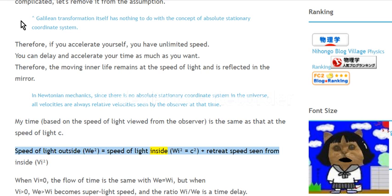Wi squared equals c squared plus retreat speed seen from inside, v squared. When v equals 0, the flow of time is the same with we equals wi. But when v is not 0, wi becomes super light speed and the ratio wi/we is a time delay.